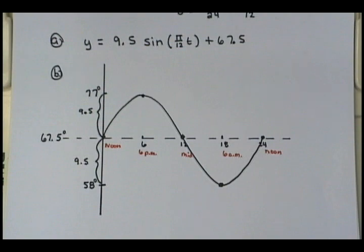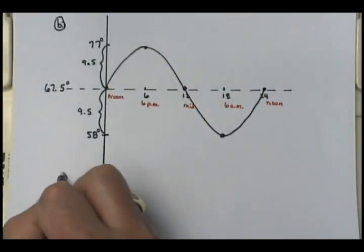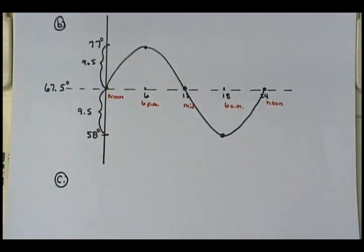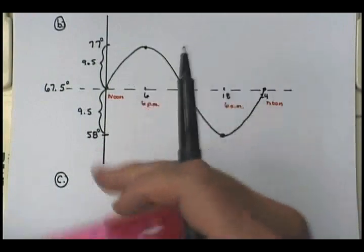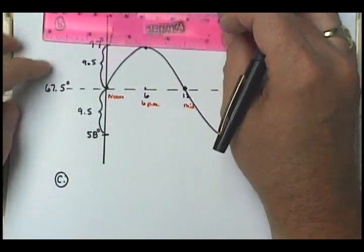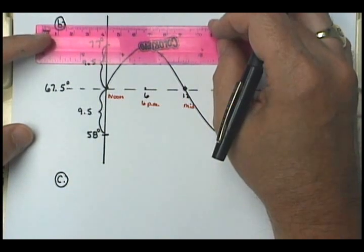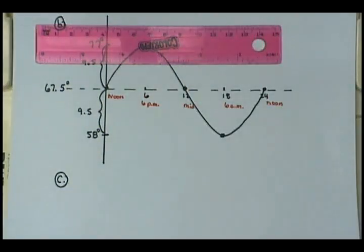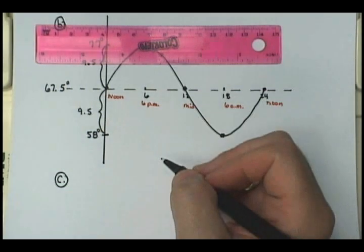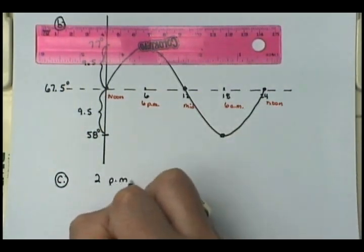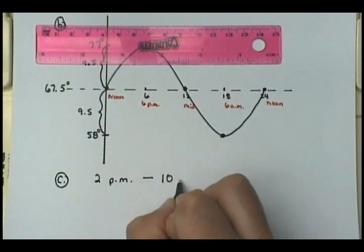For part C, they want approximately when it's going to reach 72 degrees. If 77 is the top and 67.5 is the midline, 72 would be about halfway in between there. Approximately, where does it look like it's going to be above 72 degrees? Maybe 2 p.m. until about 10 p.m.